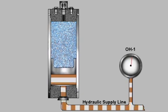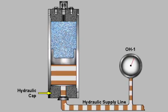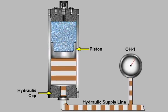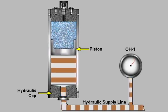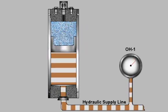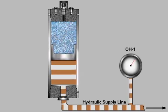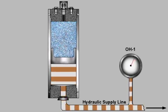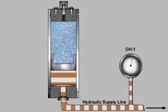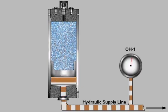Hydraulic oil enters each accumulator through the hydraulic cap and acts on a piston to compress an inert gas, usually nitrogen. If hydraulic oil pressure decreases at the accumulator inlet, the gas expands and forces hydraulic oil back out into the hydraulic supply line.